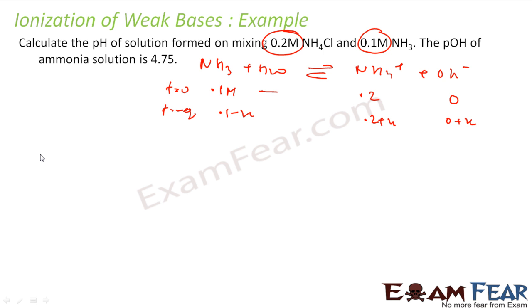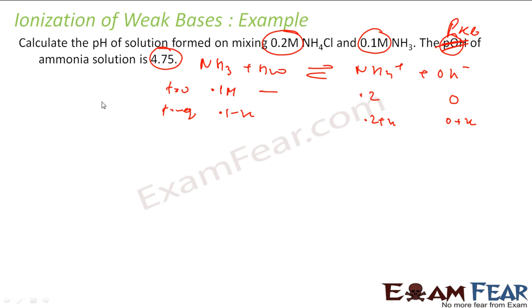KB is not directly given, but pKB = 4.75 is given. From pKB I can find KB: KB = 10⁻⁴·⁷⁵ = 1.77 × 10⁻⁵.